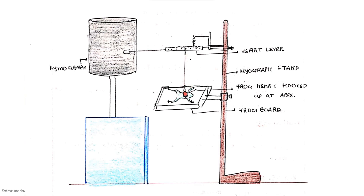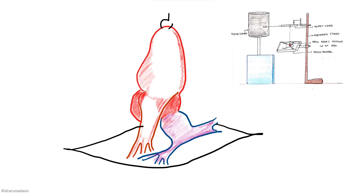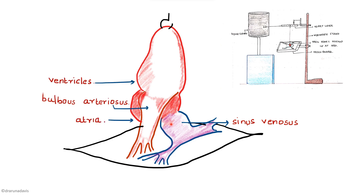If you magnify this view you can see four chambers. The first one is the sinus venosis, which is the pacemaker of the heart. Then we have the atria, then the ventricles, and finally the bulbus arteriosus. When we record a normal cardiogram we should ideally get four components: the contraction of the sinus venosis, atria, bulbus arteriosus, and ventricles.